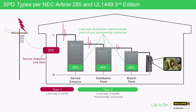The nominal discharge current rating for Type 2 is anywhere from 3kA to 20kA. Most of these have surge current ratings of 80 to 240kA.